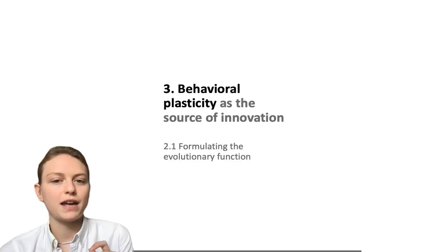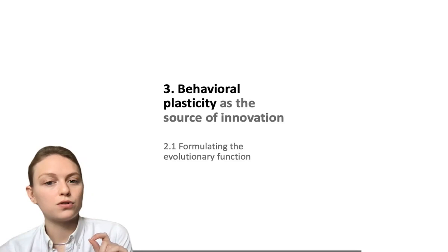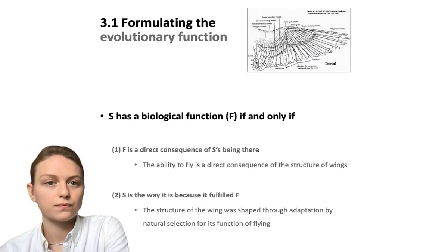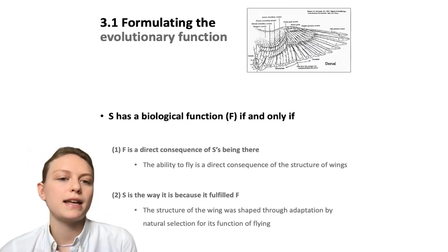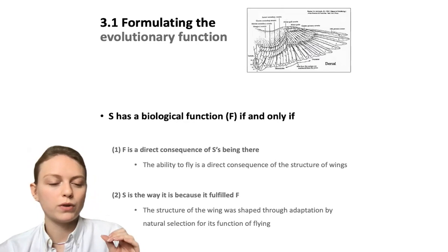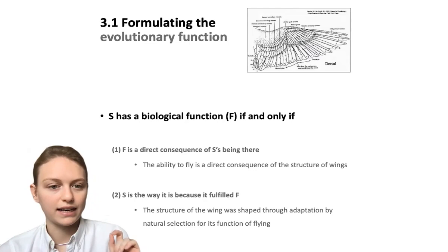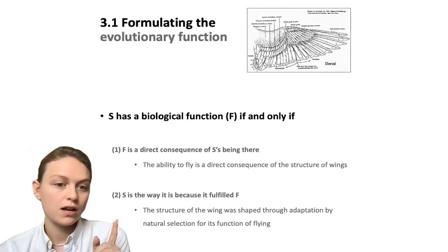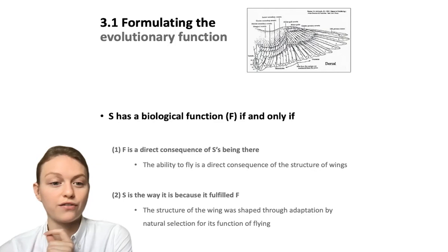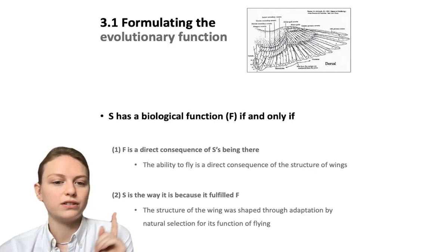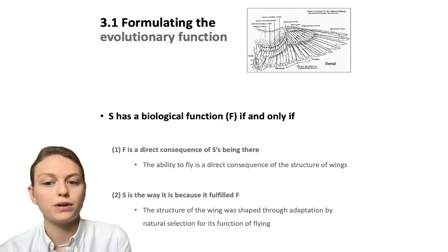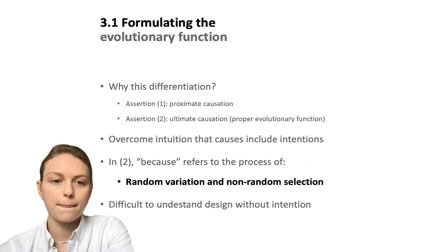Now we come to behavioral plasticity as the source of innovation — specifically formulating the evolutionary function. We can define biological function like this: S has a biological function F if and only if, one, F is a direct consequence of S's being there — for example, the ability to fly is a direct consequence of the structure of wings — and two, S is the way it is because it fulfilled F. As an example, the structure of the wing was shaped through adaptation by natural selection for its function of flying.